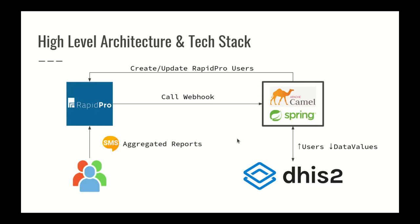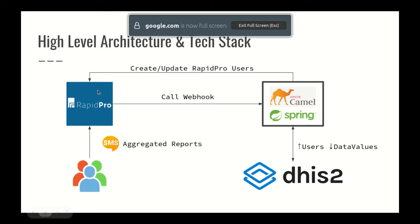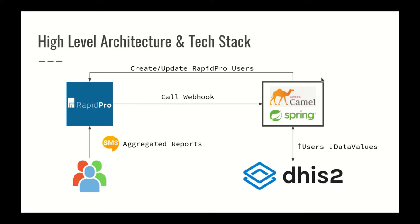We can identify three key components in the high-level architecture: a RapidPro instance, a DHIS2 instance, and the custom-made Camel and Spring-based middleware. When synchronizing contacts, the middleware reads users with valid phone numbers from DHIS2 and creates or updates RapidPro contacts. When receiving aggregated reports from RapidPro users via SMS or other communication mechanisms, the RapidPro flow calls the webhook on the middleware, which then translates the payload into a DHIS2 data value set and updates the DHIS2 instance with the corresponding data values.